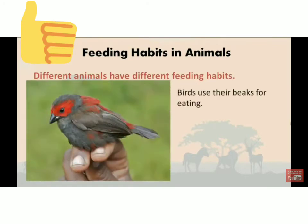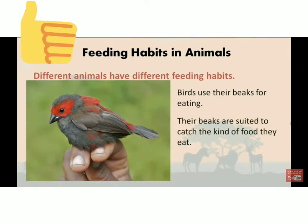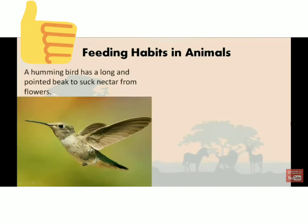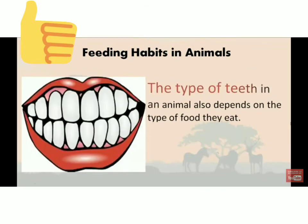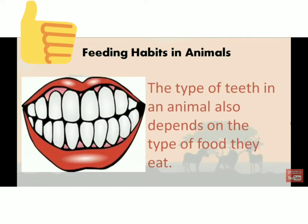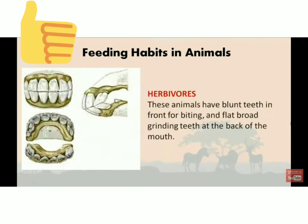According to feeding habits, animals have different adaptations. Birds use their beaks for eating and their beaks are suited to the kind of food they eat. A hummingbird has a long and pointed beak to suck nectar from flowers. An eagle has a sharp and hooked beak for catching and killing its prey. The type of teeth in an animal also depends on the type of food they eat.